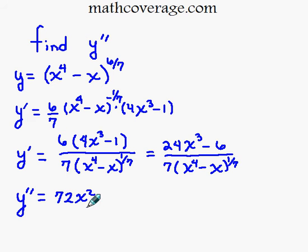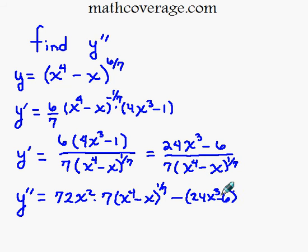Rewriting the bottom, minus, then rewriting the top, times the derivative of the bottom. Bring the 1/7 out front. 1/7 times 7 is just 1.